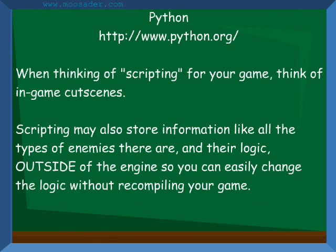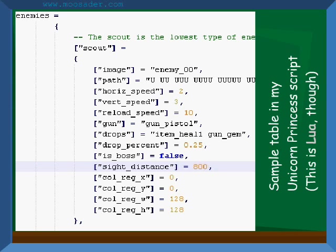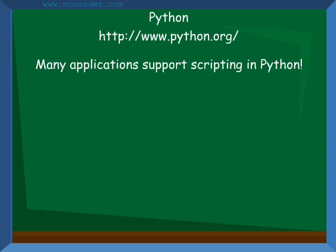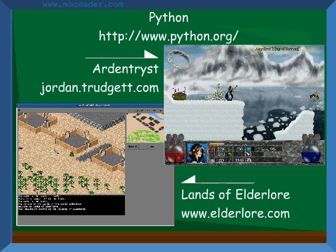Scripting languages are widely used in games these days, handling things from scripted cutscenes, to NPC behavior and AI, to handling calculations and storing tables of information. Python is also used for scripting in many applications such as GIMP and Blender. Some games made with Python are Art Interest and Lands of Elder Lore.